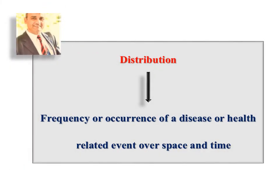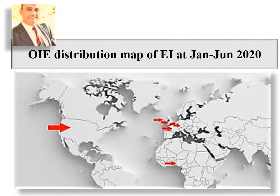Distribution means the frequency or occurrence of a disease or health-related events over space and time. This OIE map of equine influenza distribution from January to June 2020 shows the distribution of equine influenza in the United States, Nigeria, and some countries of the European Union, giving a complete picture of its global distribution.